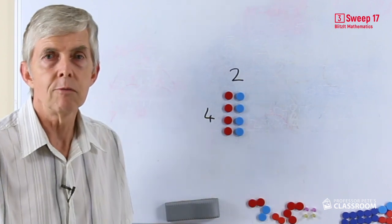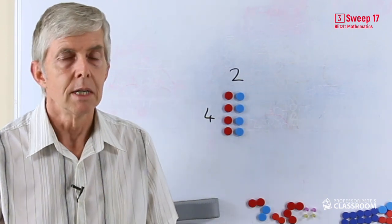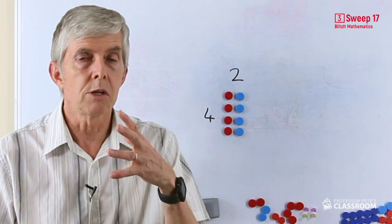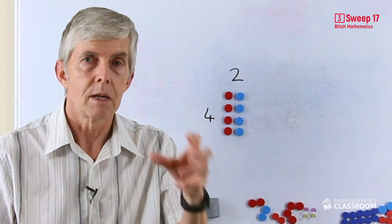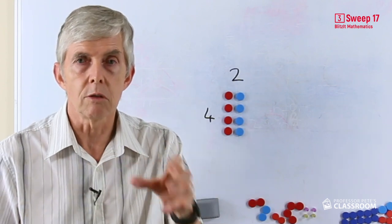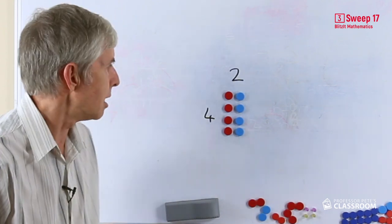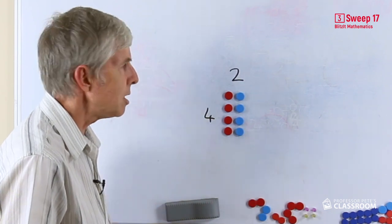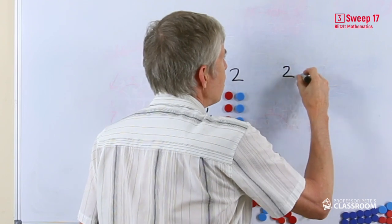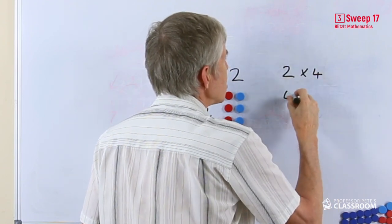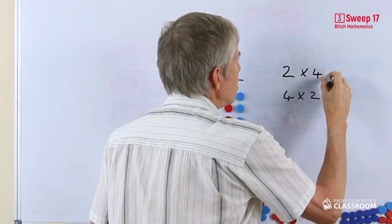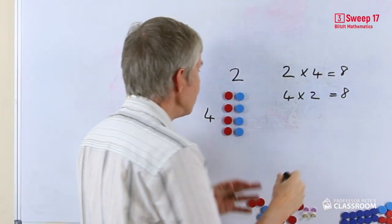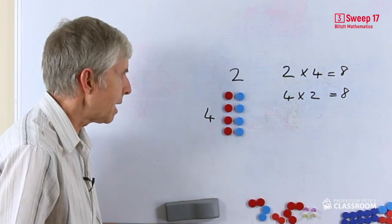This is what we call an array. It has rows and columns. It's a really neat model for multiplication and we can use it in so many different ways to relate known facts to new facts and new strategies and that sort of thing. So here we have a nice easy way of showing a couple of multiplication number facts. Two times four and its turnaround, four times two. Of course they both equal eight.